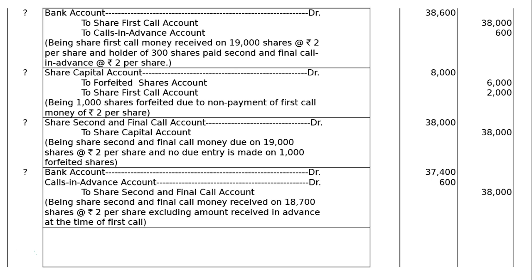Next, receipt entry — all money received. Bank account debited, calls in advance account debited to share second and final call account. Being share second and final call money received on 18,700 shares at the rate of Rs. 2 per share, excluding amount received in advance at the time of first call. Rs. 38,000 should have been received on second call, but we already received Rs. 600 as calls in advance. Calls in advance was earlier credited — now it is debited for cancellation. Out of Rs. 38,000, Rs. 600 is adjusted, so Rs. 37,400 is newly collected from bank.